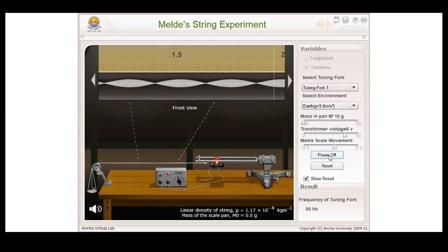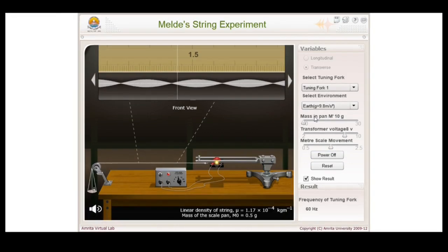The tuning fork is set into vibration. It vibrates perpendicular to the length of the string. Thus with the initial mass 10 grams, the transverse stationary waves are set up in the string, and 3 well defined loops have been formed. The point where it shows node displacement is called nodes, and the point where it shows maximum amplitude is called anti-nodes.